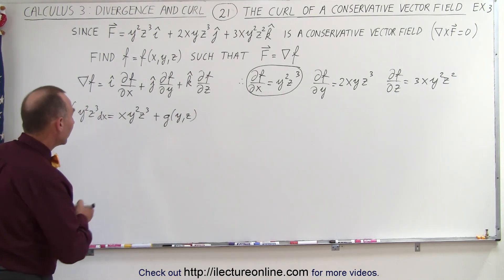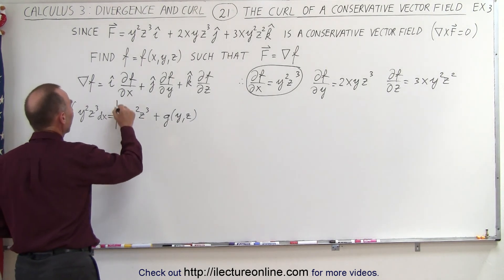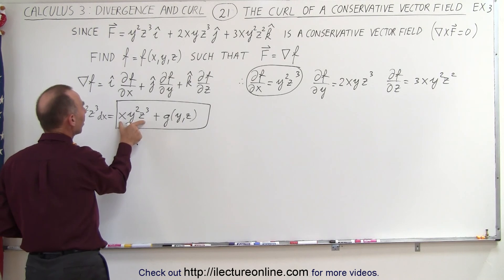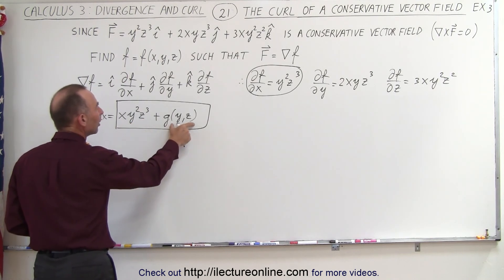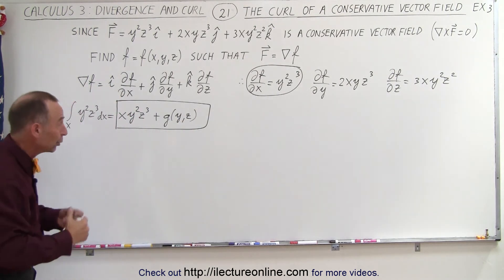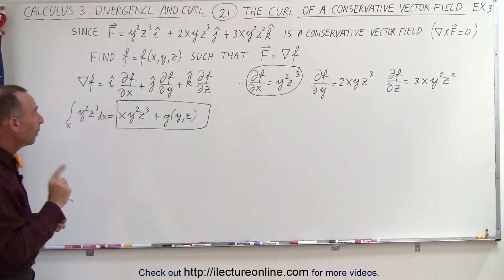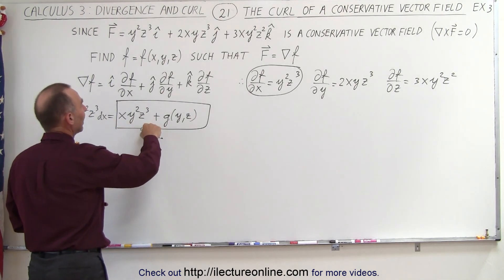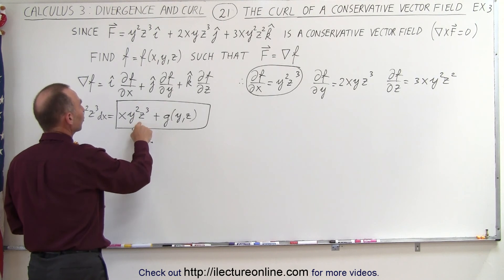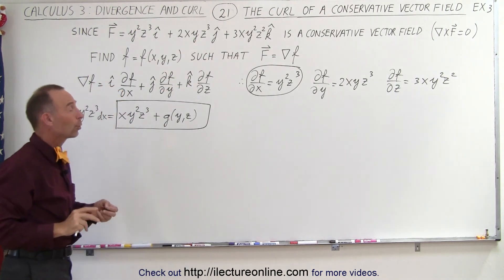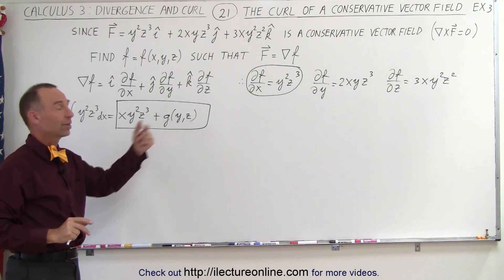This is a possible form of the function. We have a known part, xy²z³, but we have an unknown part — another function only of the variables y and z — and we don't know yet what that is. But we do know that if we assume this to be the function we're looking for and take the partial derivative with respect to y, we should get the known value, regardless of what this extra term is.